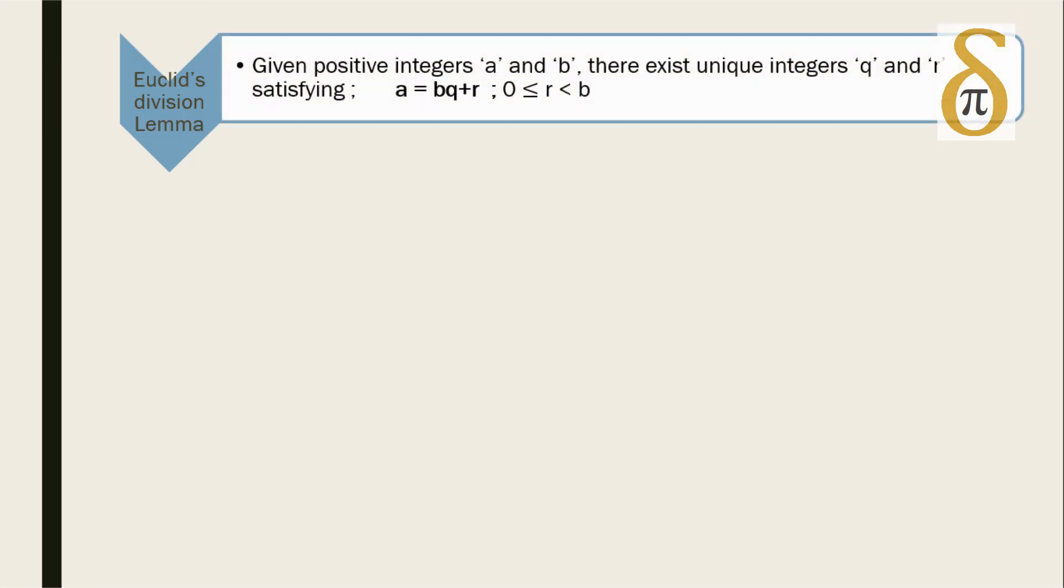The first topic is Euclid's division lemma. It states that given positive integers a and b, there exist unique integers q and r satisfying a equals bq plus r, where the remainder is greater than or equal to zero or less than the divisor b.